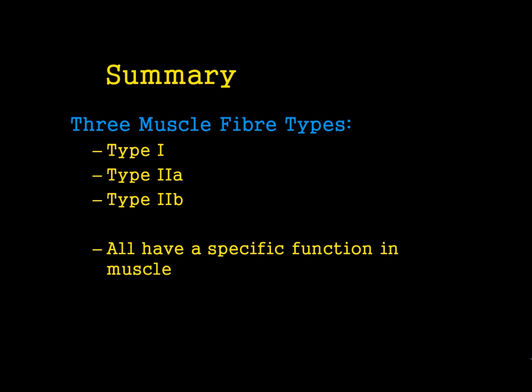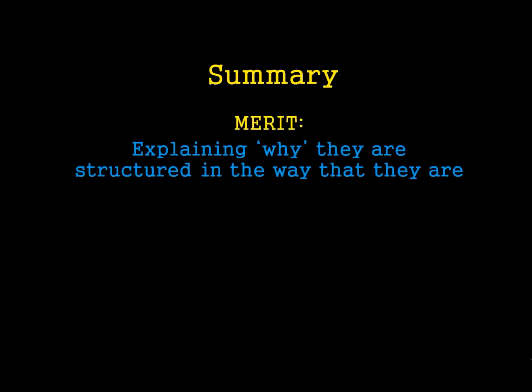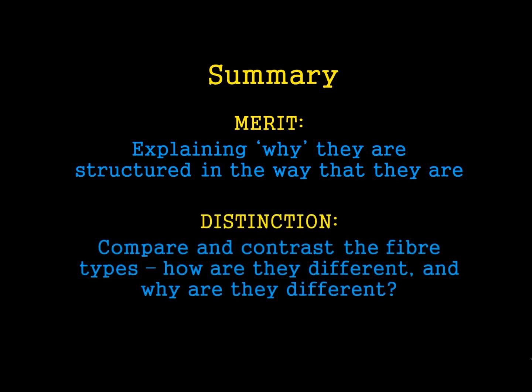In summary, there are three muscle fibre types. You need to be able to describe all three, but you also need to be able to explain them. For merit, you need to explain why they're structured in the way they are — for example, why Type 1 muscle fibres have a huge amount of mitochondria. For distinction, you need to be able to compare and contrast: how are they different and why are they different.